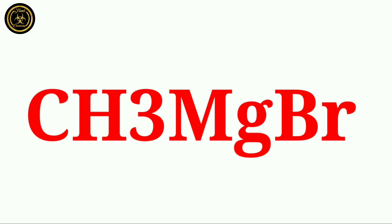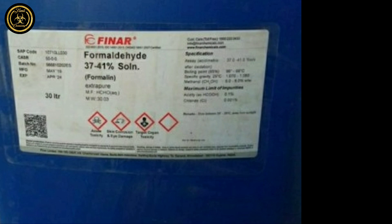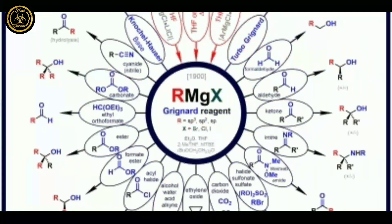The formula for the Grignard Reagent is CH3MgBr.